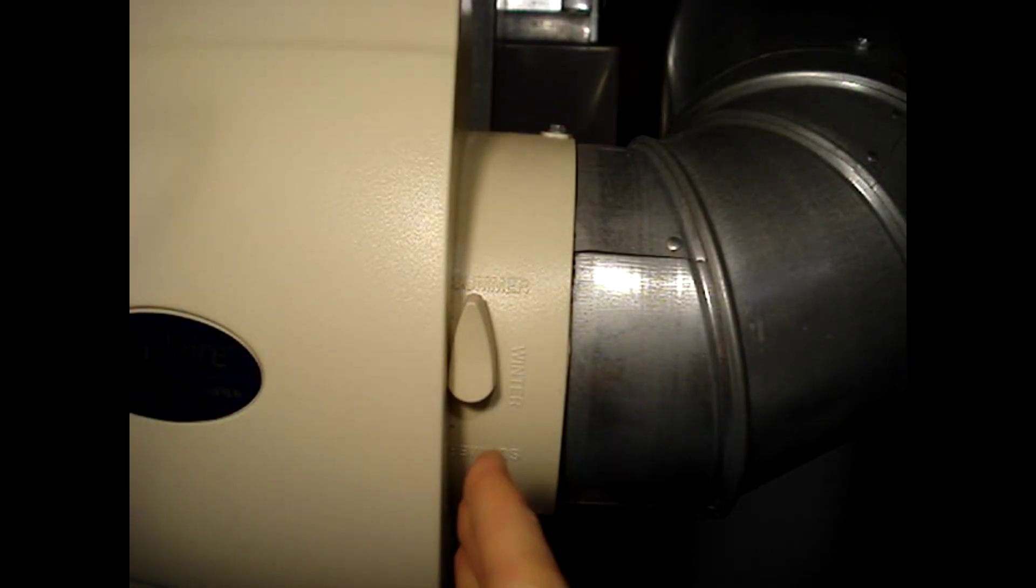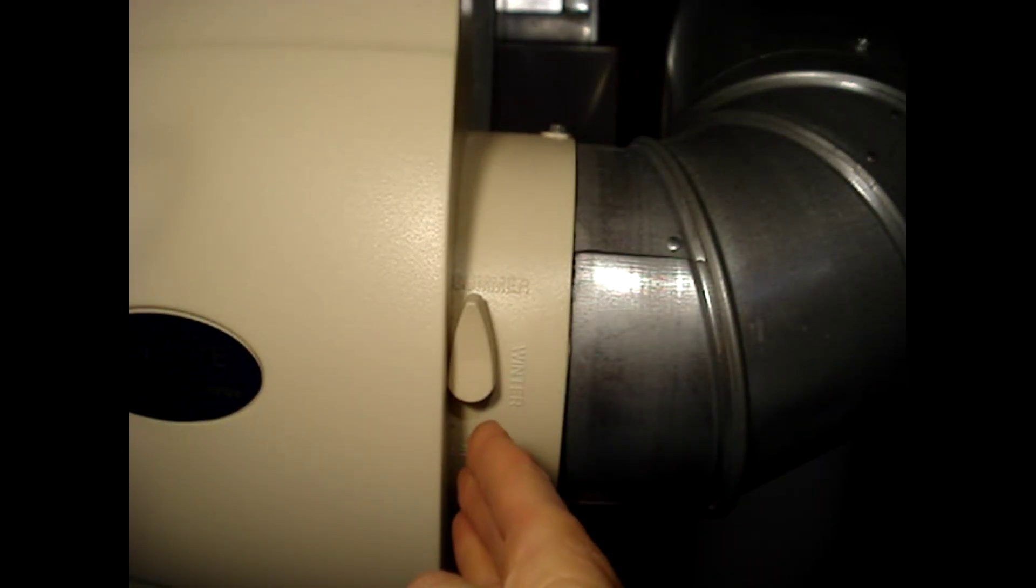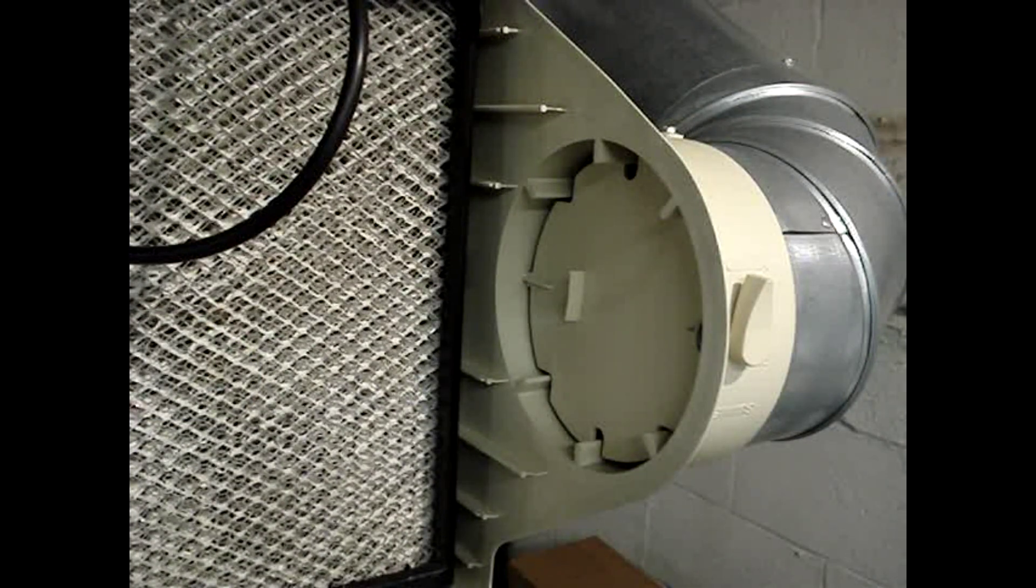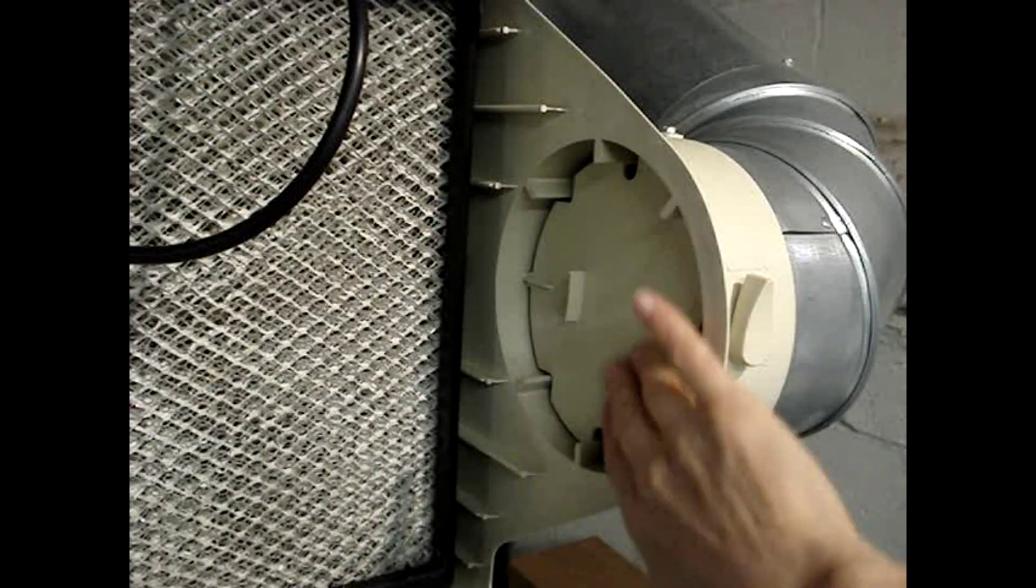When the lever handle points across the ductwork, the damper is closed. In most climates in the summer, you won't want to add humidity to the air, so the damper will be closed.